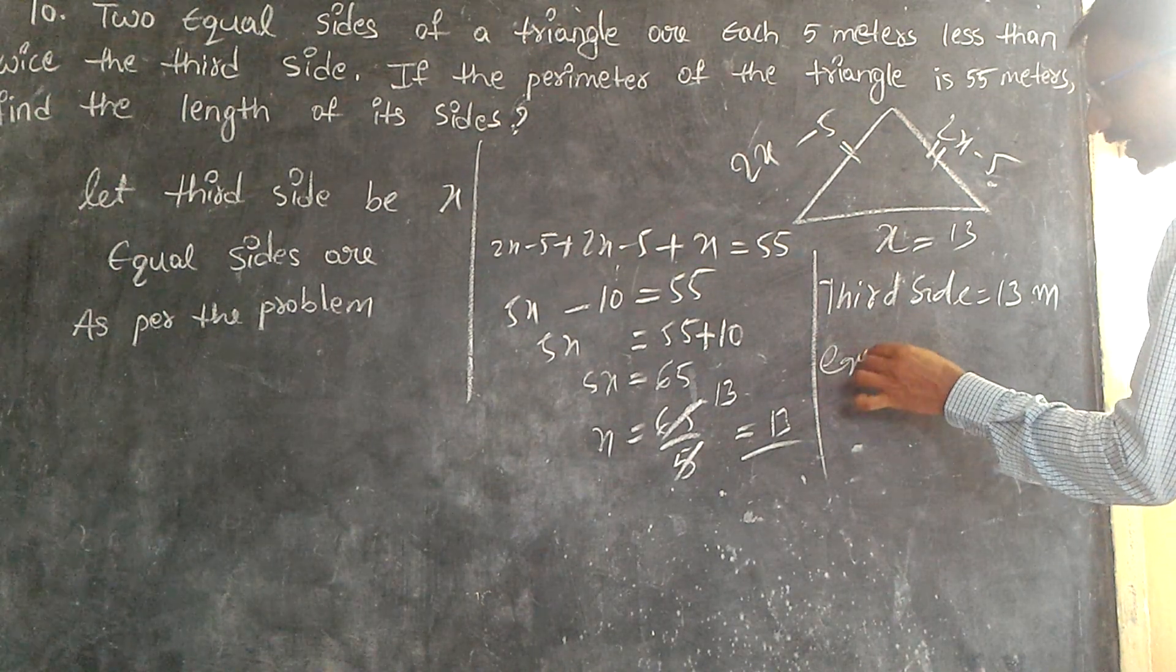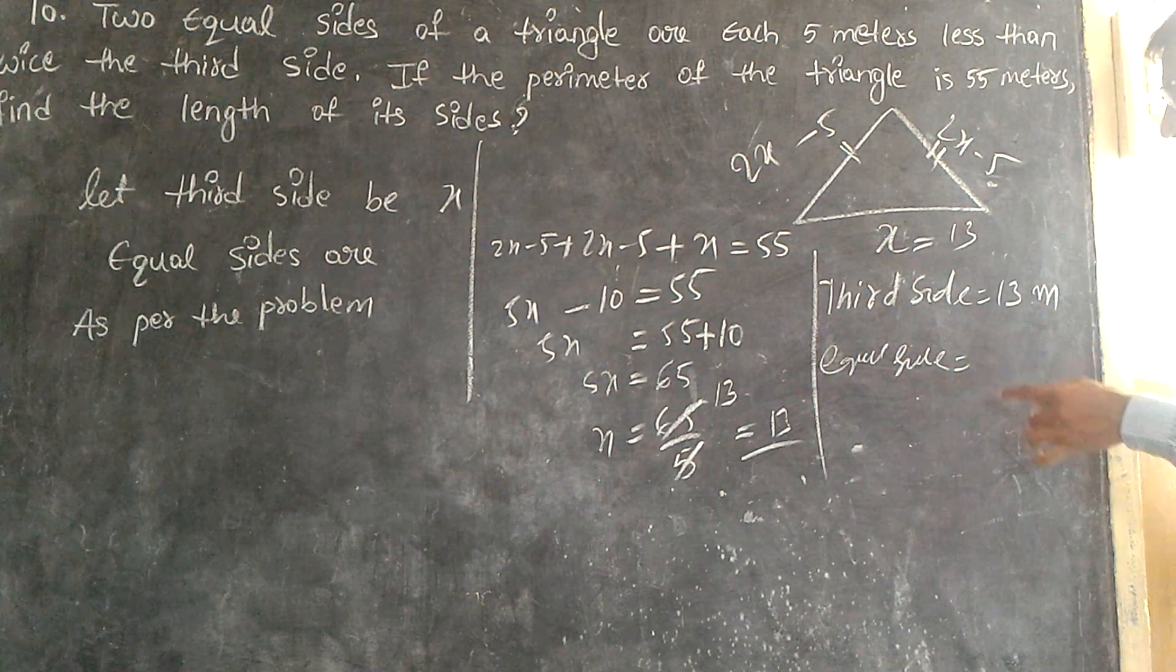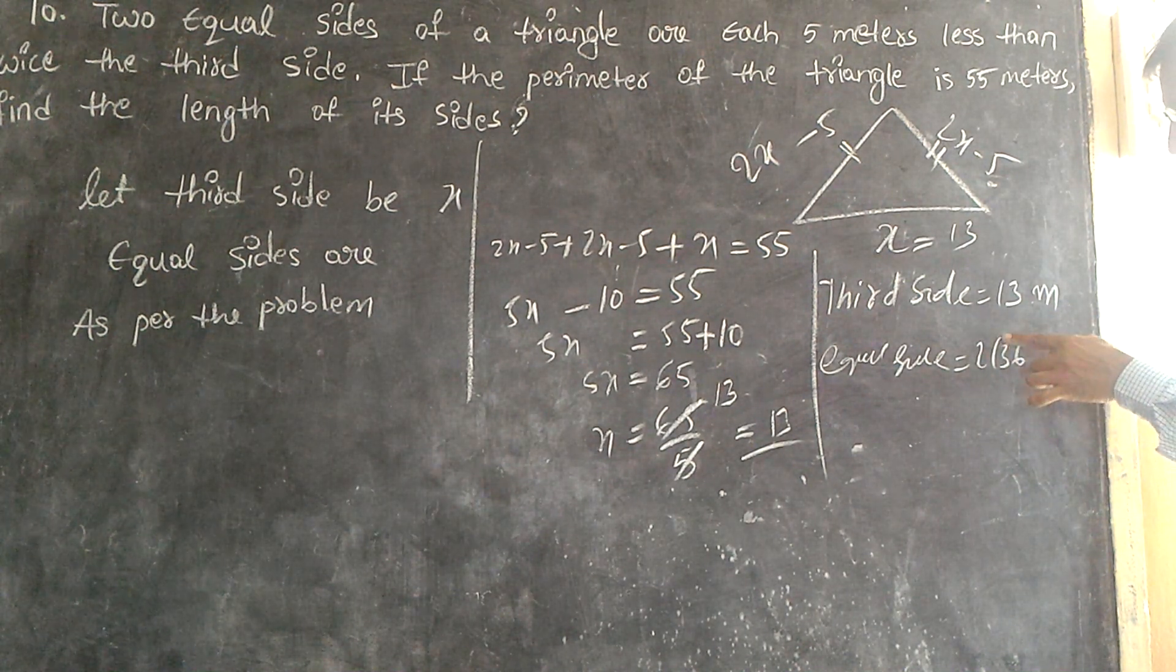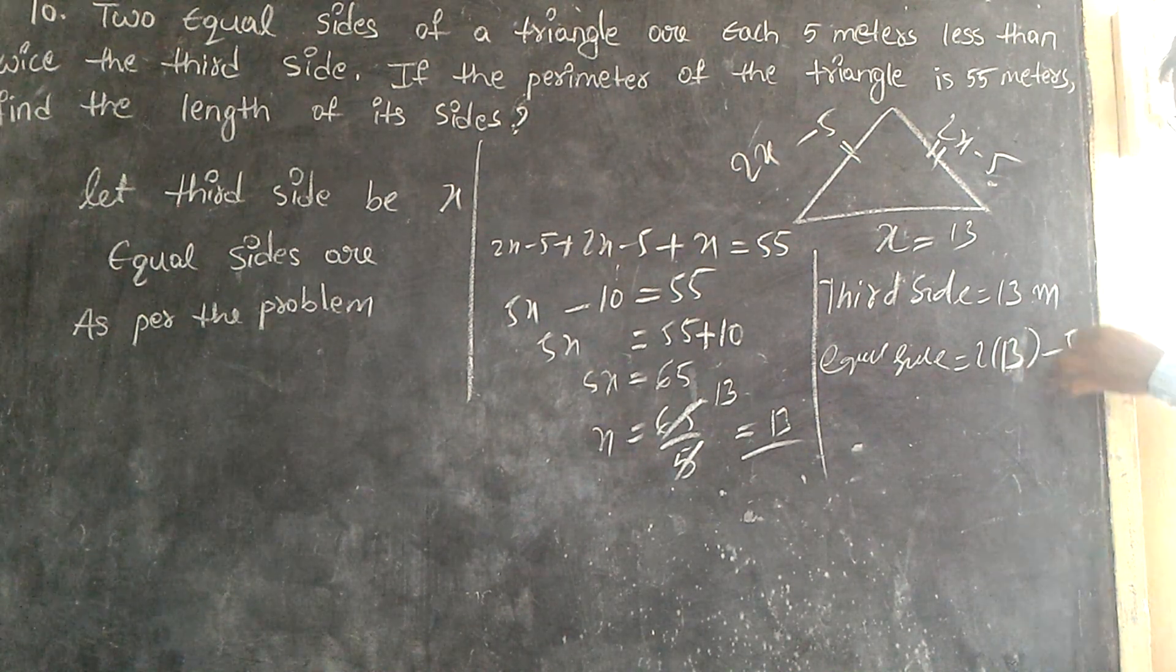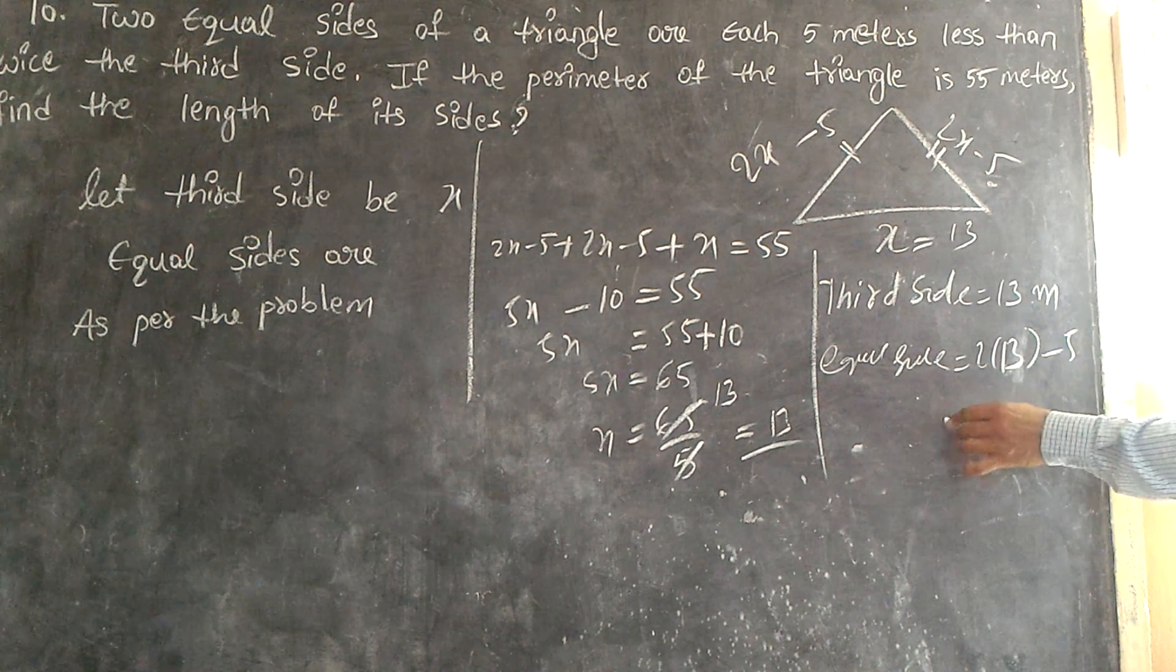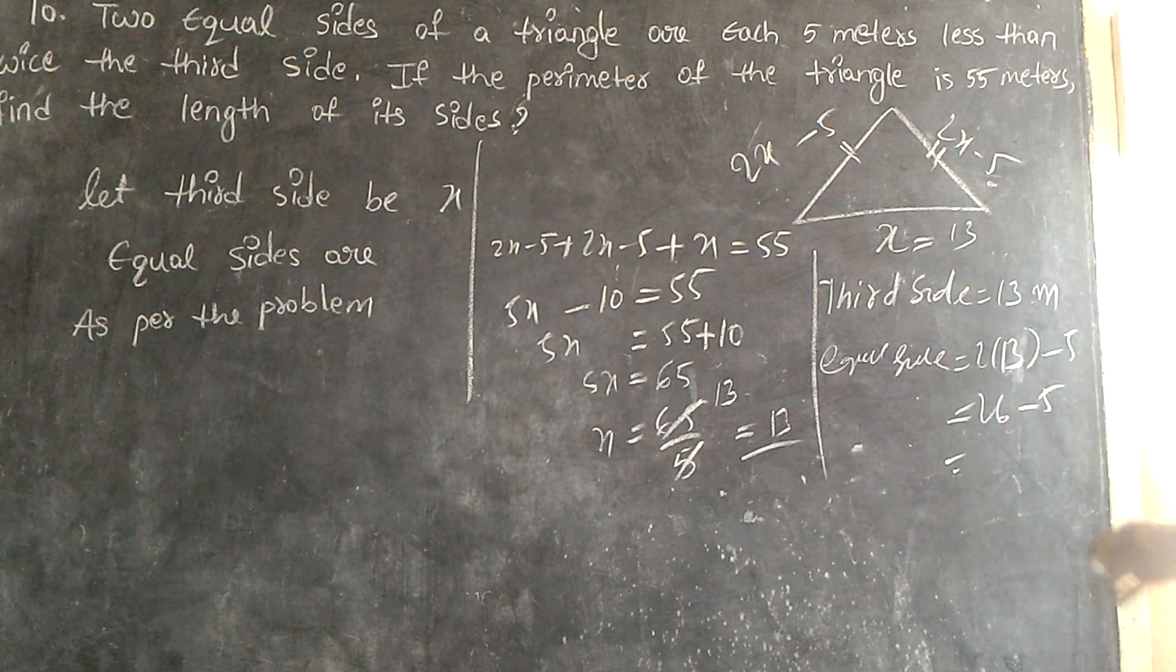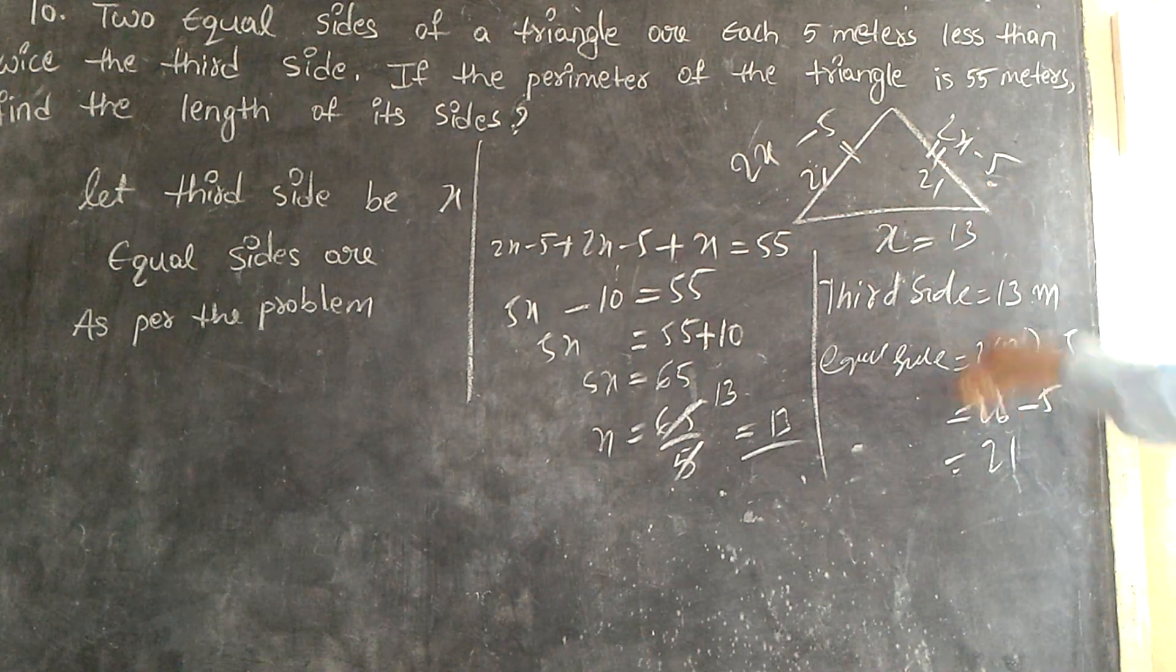The equal sides: 2 times 13 minus 5, right? 2 times 13 is 26, minus 5. How much? 21. So this is 21 and this is also 21.